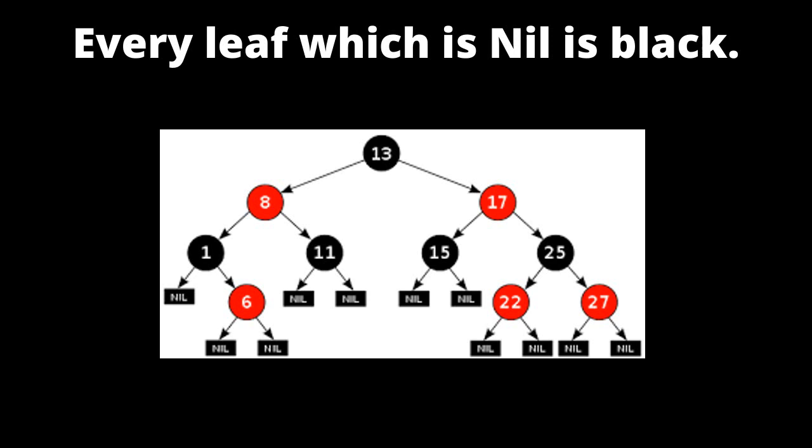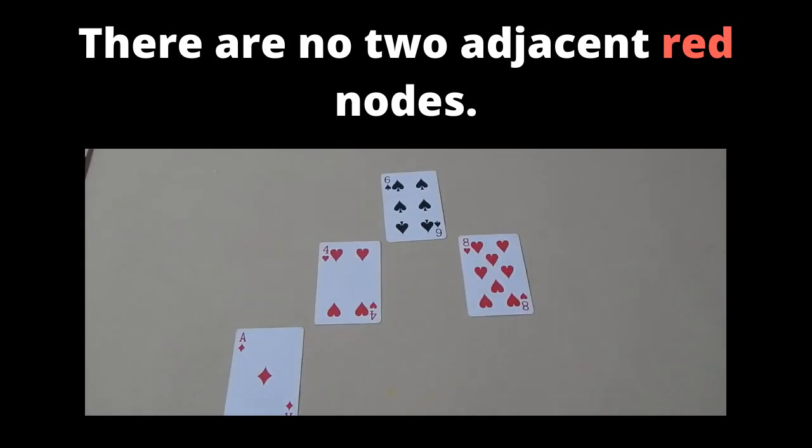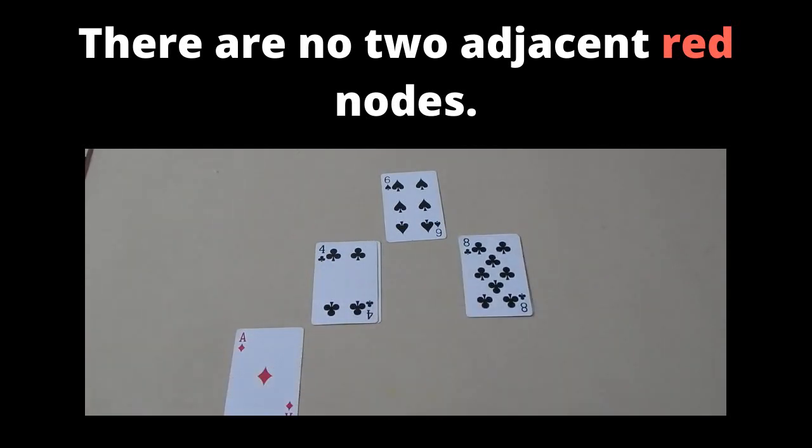3. Every leaf node, i.e. nil node, is black. 4. If a node is red, then both its children are black, i.e. there are no two adjacent red nodes.